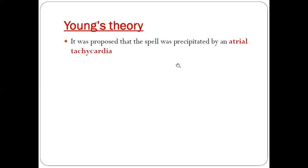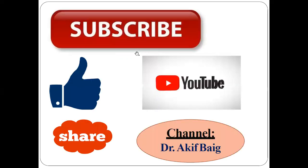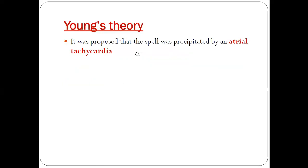Next is Young's theory, which states that these spells usually occur because of the presence of atrial tachycardia. Atrial tachycardia leads to arrhythmia, which in turn leads to cyanotic spells — this is one of the theories explained by Young's theory.